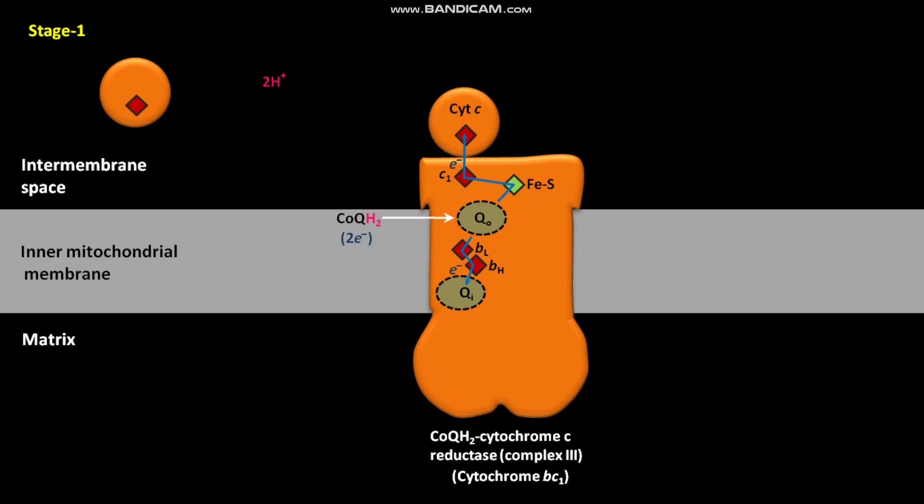The QI site is present on the matrix side of the transmembrane portion of complex III. In the QO site, due to the release of two H+ ions and two electrons from reduced COQH2, a COQ is produced. The COQ then dissociates from the QO site and returns to the inner mitochondrial membrane.